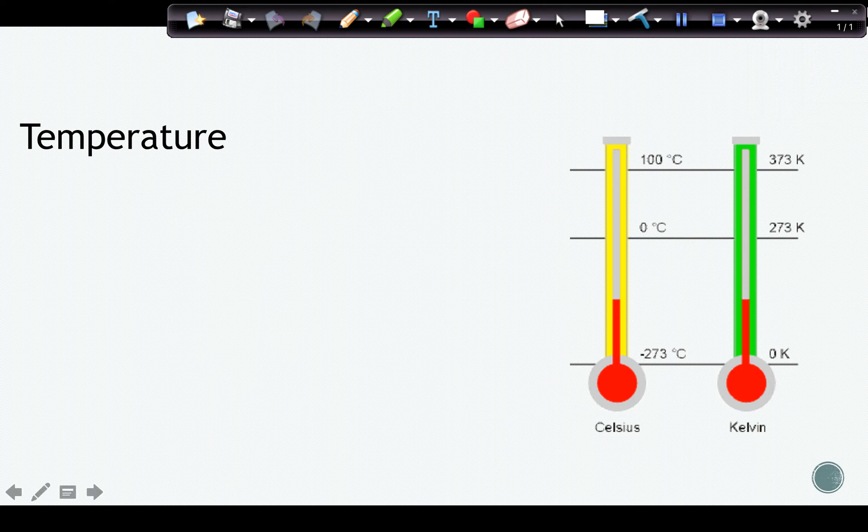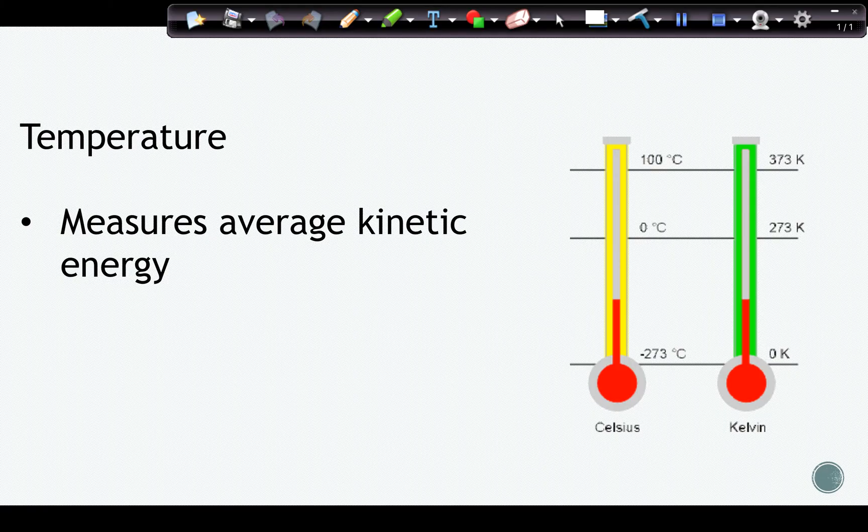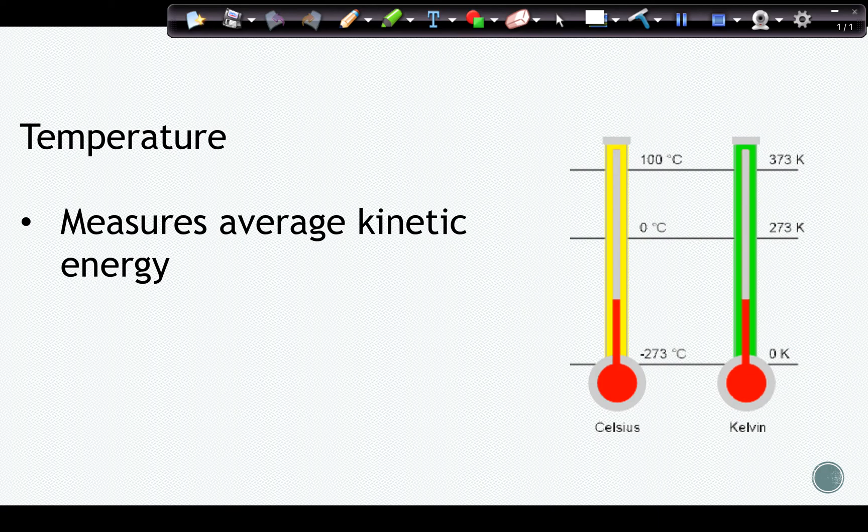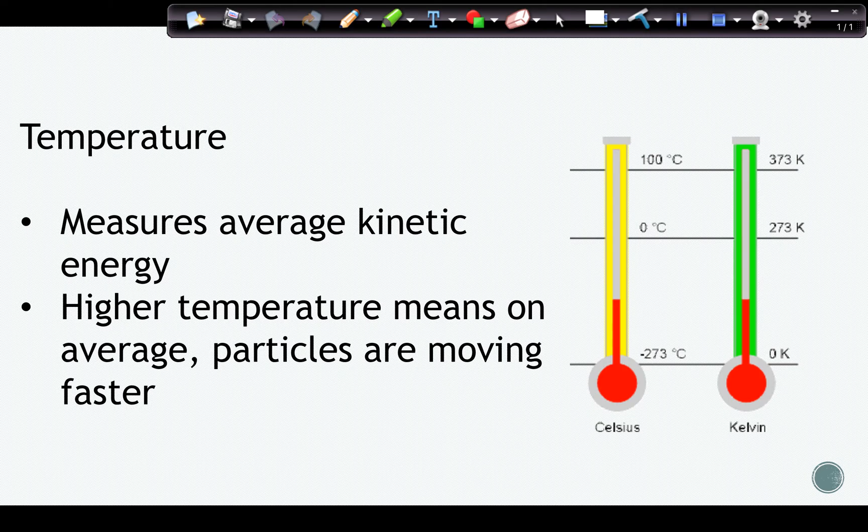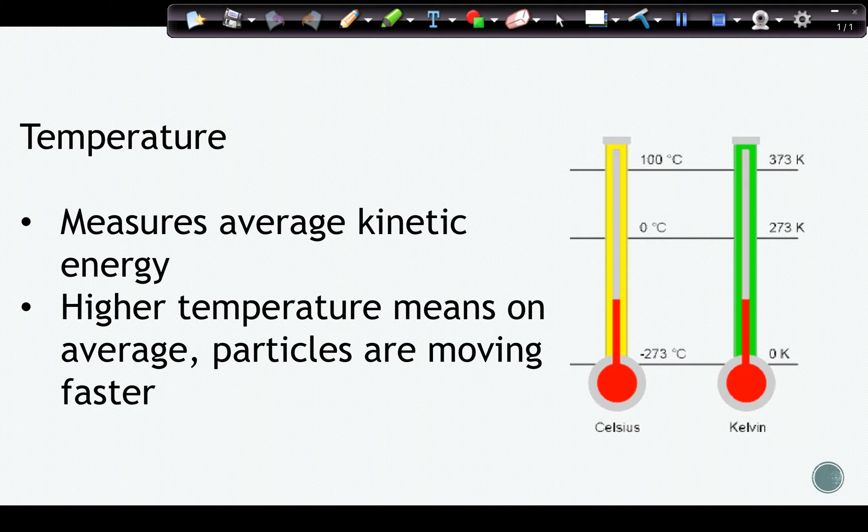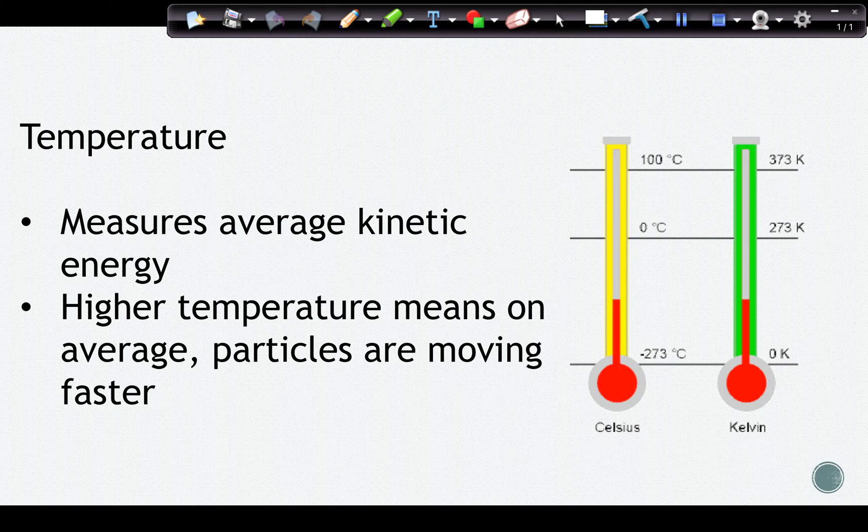So the first thing we're going to review in this video is temperature. And if we look at temperature, remember, we always want to keep average kinetic energy in mind when we think about temperature, because temperature measures average kinetic energy. Higher temperature means that the particles are moving faster on average, and it also means that the particles have a higher average kinetic energy if there is a higher temperature.